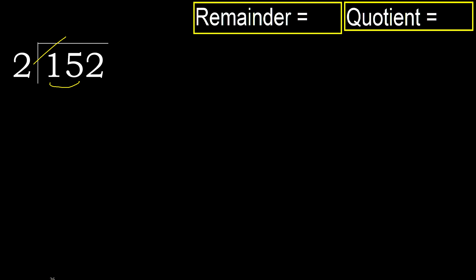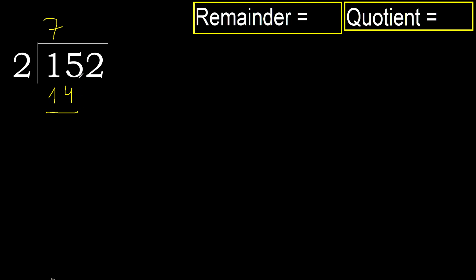2 multiplied by which number is nearest to 15 but not greater? 2 multiplied by 8 is 16, which is greater. Multiply by 7: 14 is not greater. Subtract 1, next 12.